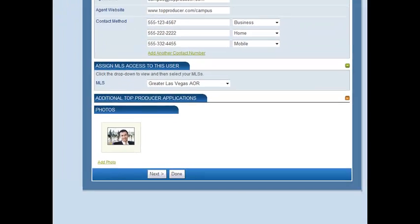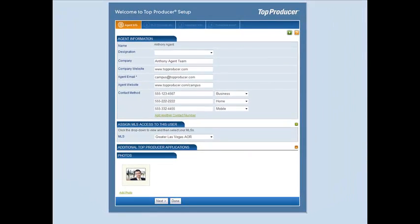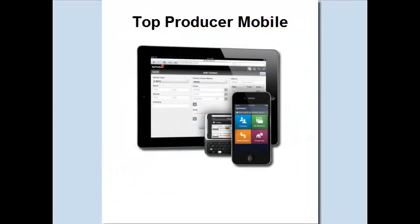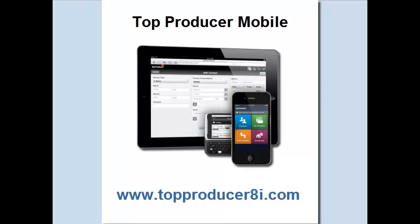Click Next to go to the next step of the Setup Wizard. Please note that after completing the Agent Information Setup step, you can begin using Top Producer Mobile, which is available on any compatible touchscreen mobile device with an internet connection. Top Producer Mobile will allow you to access your contacts, follow up with leads, schedule appointments and view your properties. To access Top Producer Mobile, simply log in to www.topproducer8i.com from your device.